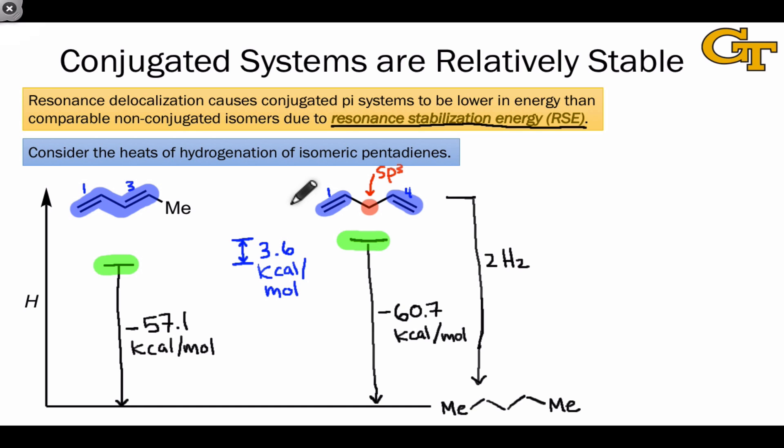If for example, we treated the 1,4-pentadiene with a strong base that promoted isomerization, we would end up at equilibrium with a product mixture containing a vast majority of the 1,3-isomer rather than the 1,4-isomer.